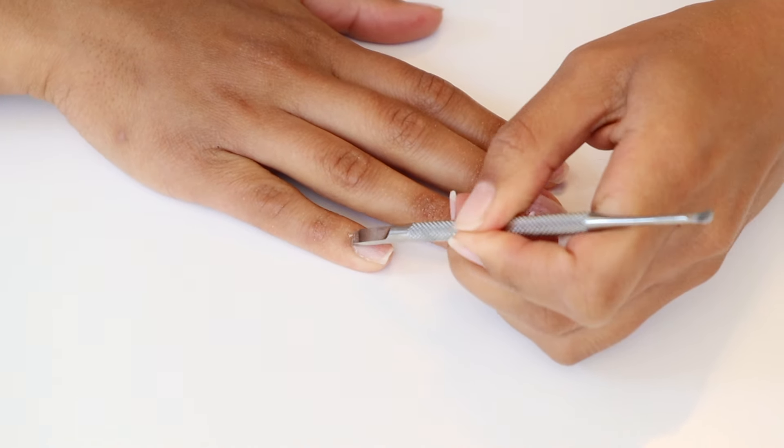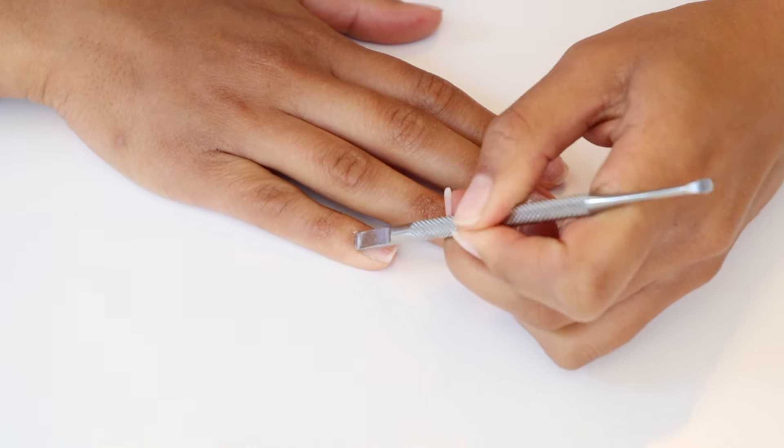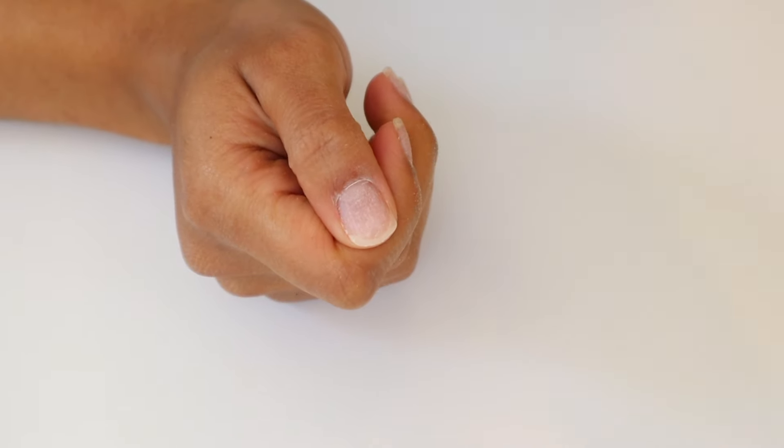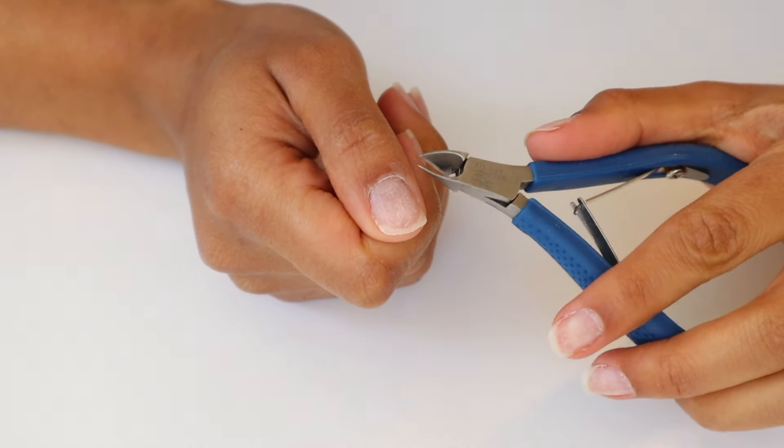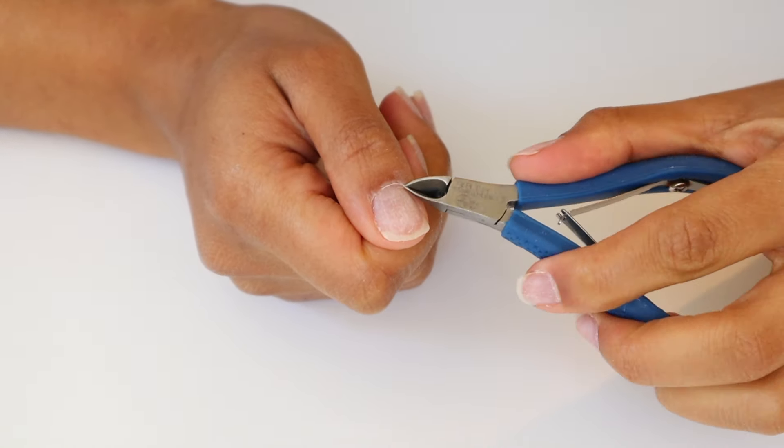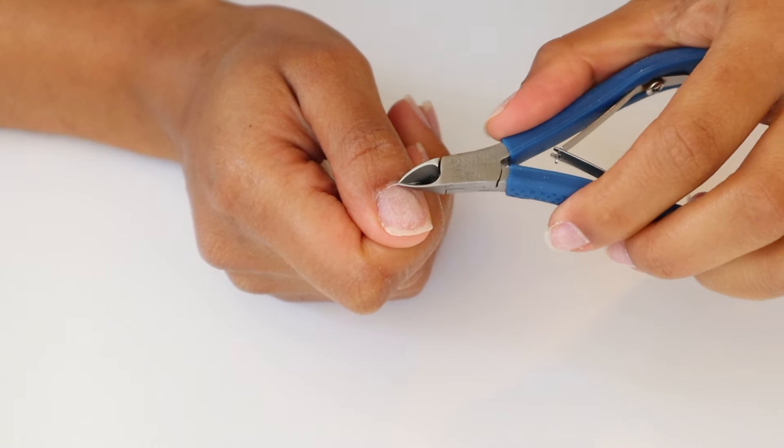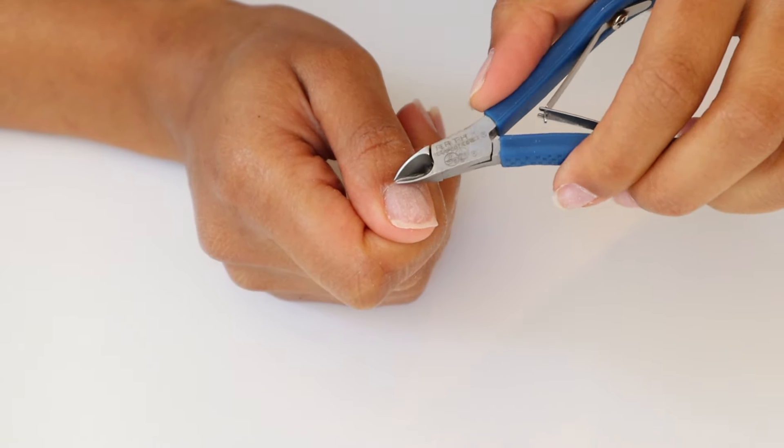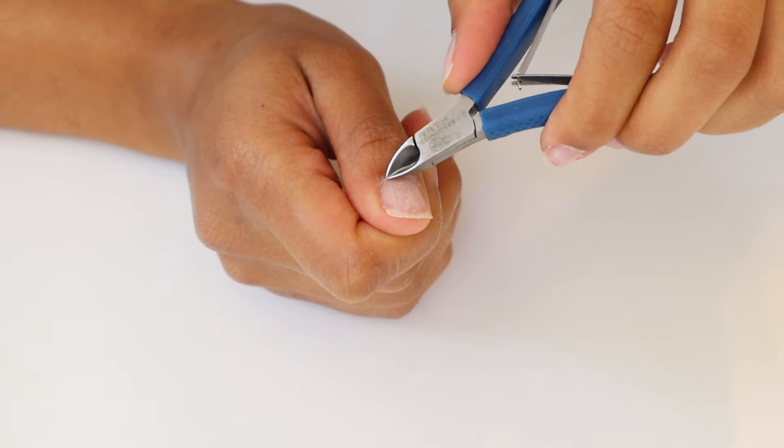Now this step is completely optional, so you don't have to nip or trim your cuticles. But I absolutely love doing this just because I feel like my manicure lasts longer. If you don't feel comfortable doing this, you can always just leave them pushed back and moisturize them with either cuticle moisturizer, cuticle oil, or coconut oil if you don't have any other oil at home.